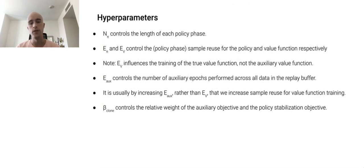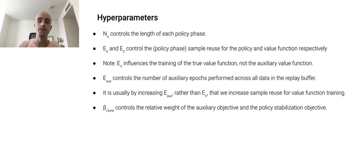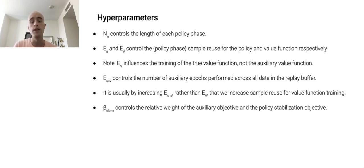It's helpful to look at the key hyperparameters introduced by PPG. N_π controls the number of policy updates performed in each policy phase. E_π and E_V control the sample reuse for the policy and the value function respectively, both used during the policy phase. Although these are conventionally set to the same value in PPO, this is not a strict requirement in PPG. Note that E_V influences the training of the true value function, not the auxiliary value function. E_aux controls the sample reuse during the auxiliary phase, representing the number of epochs performed across all data in the replay buffer. It's usually by increasing E_aux rather than E_V that we increase sample reuse for value function training. Finally, β_clone controls the relative weight of the auxiliary term and the policy stabilization term during auxiliary optimization.